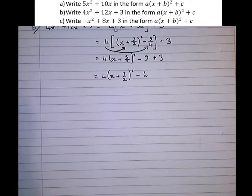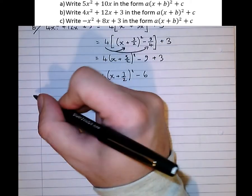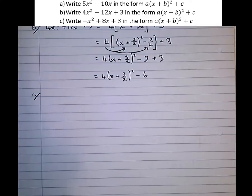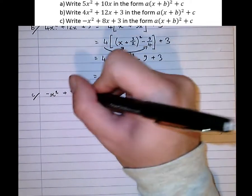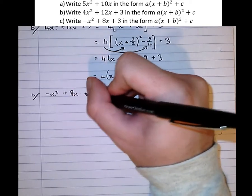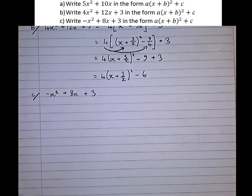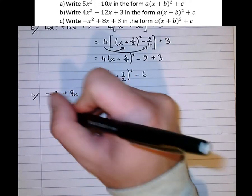Finally, the third one. Minus x squared plus 8x plus 3. Well, again, this is almost the same as the previous examples. We've got a number other than 1 in front of the x squared. We've got minus 1.